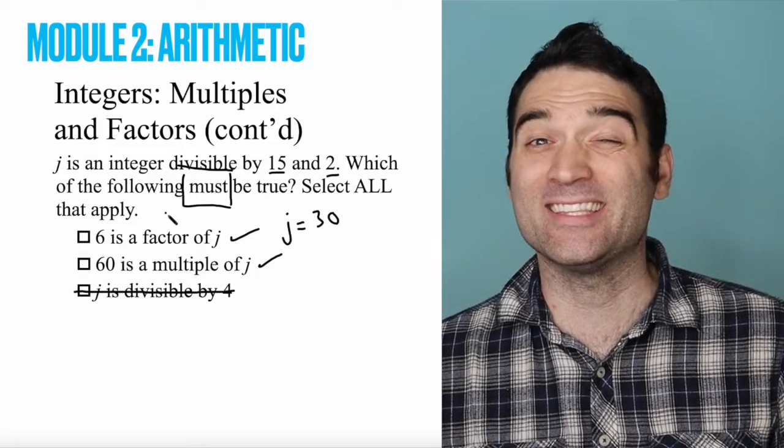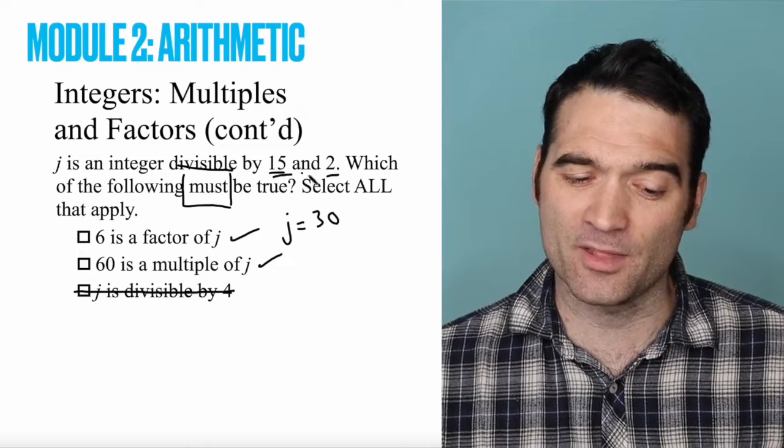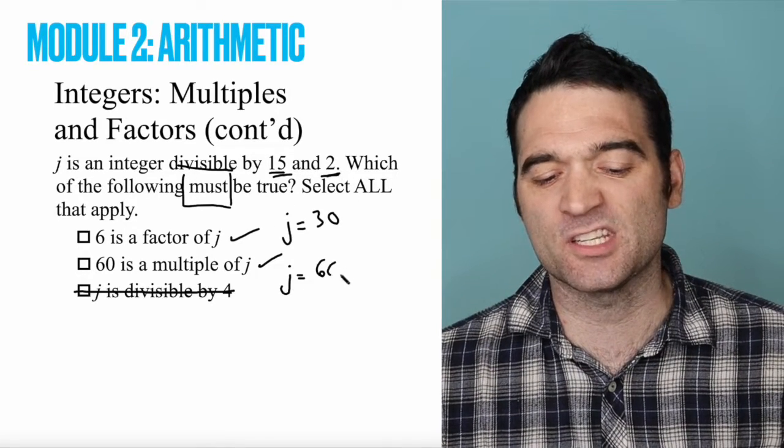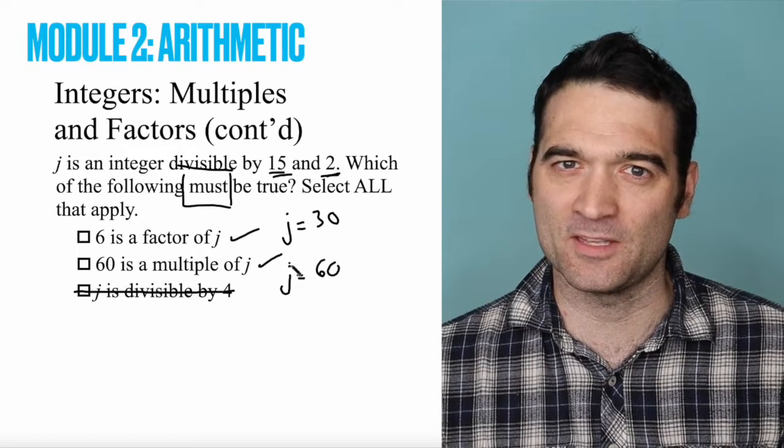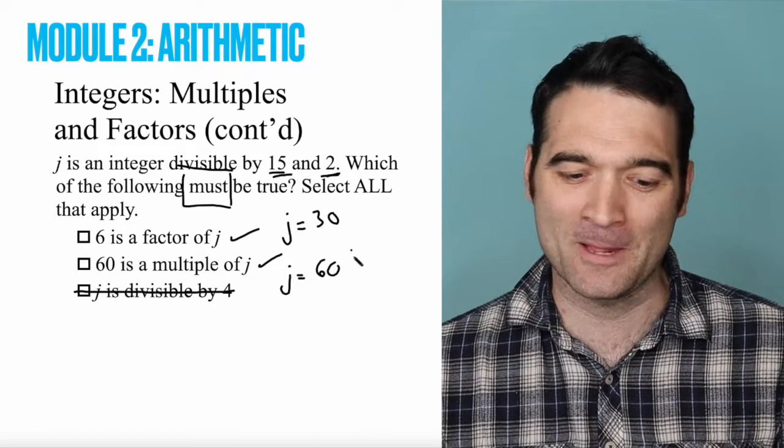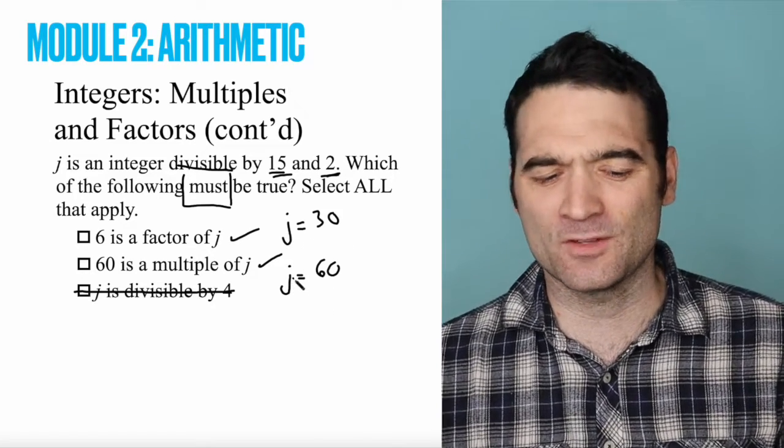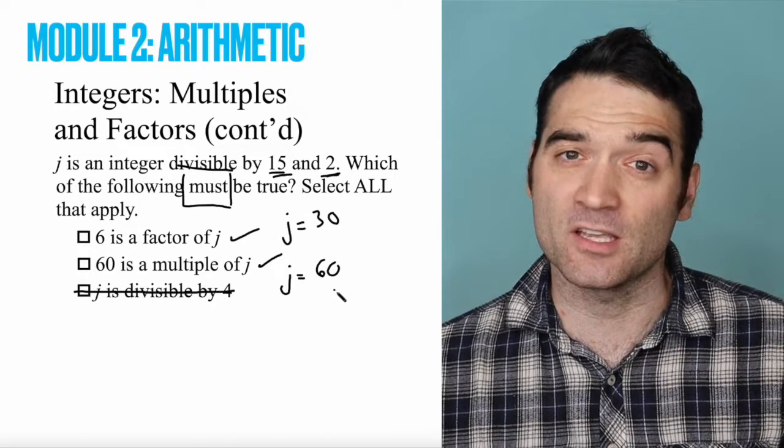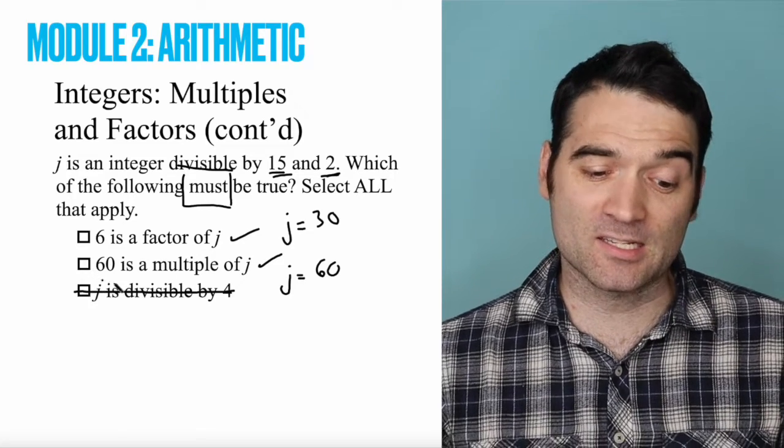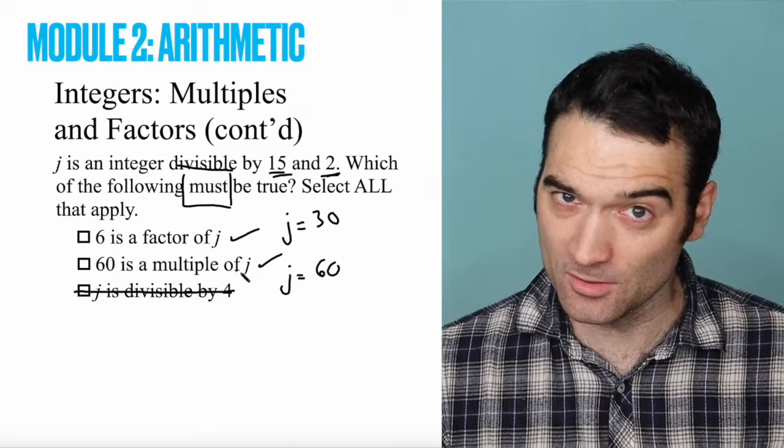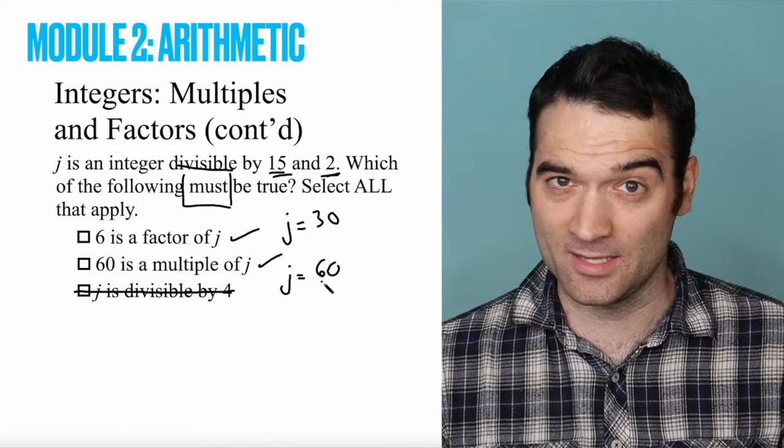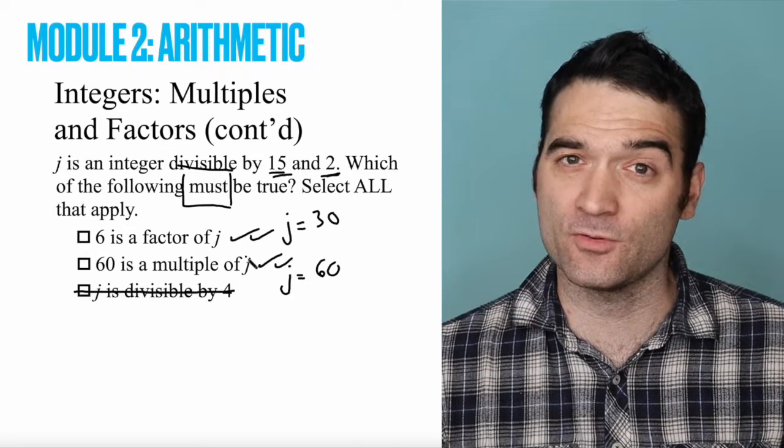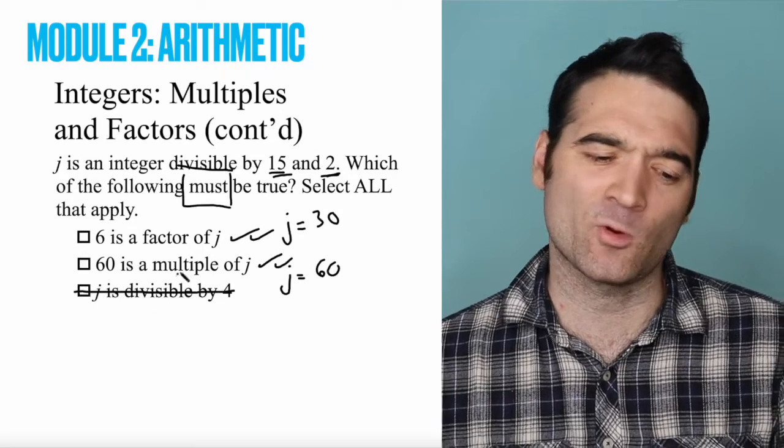So let's go ahead and try a different number. What's another number that's divisible by 15 and 2? How about 60, right? 60 is divisible by 15 and 2. Check your calculator if you don't believe me. Right? 60 is a number divisible by 15 and 2. Is 6 a factor of 60? Yeah, it is. Is 60 a multiple of 60? Absolutely it is, right? 60 times 1 is 60. So again, two check marks. These are both true here. I've already eliminated this one, so I don't have to worry about it.